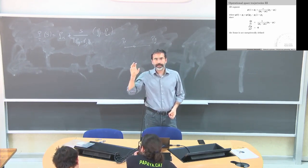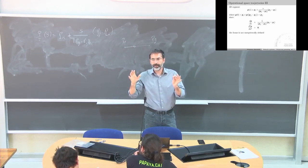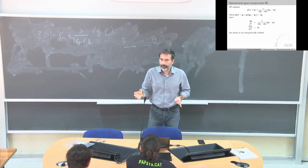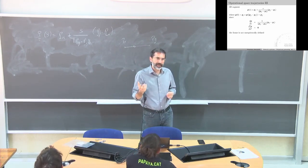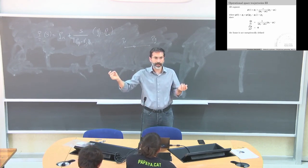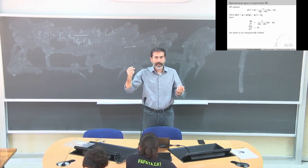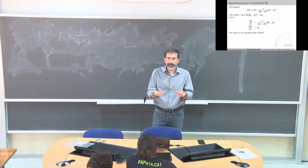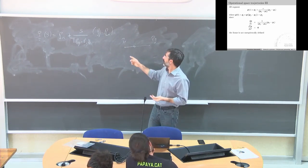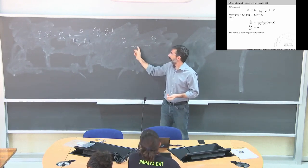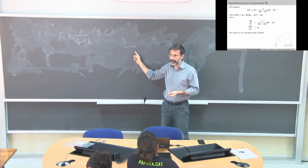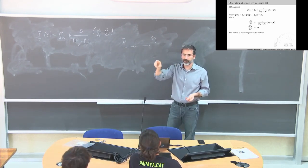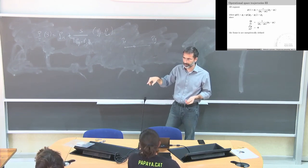Now I can start imagining what I can do in the operational space. Since S represents the path from zero to the length of the segment, if I assign to S a time law, it means I'm able to go from I to F, and in the operational space I can assign the desired velocity profile — for example, the trapezoidal velocity profile that we will see.